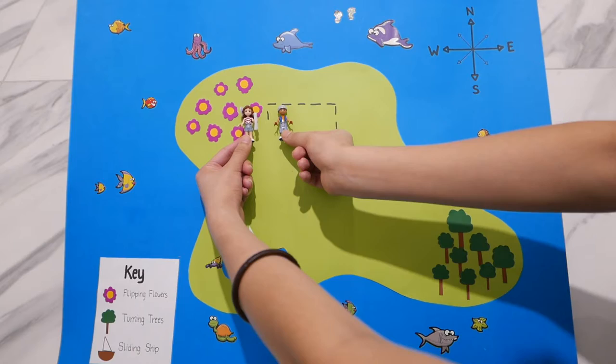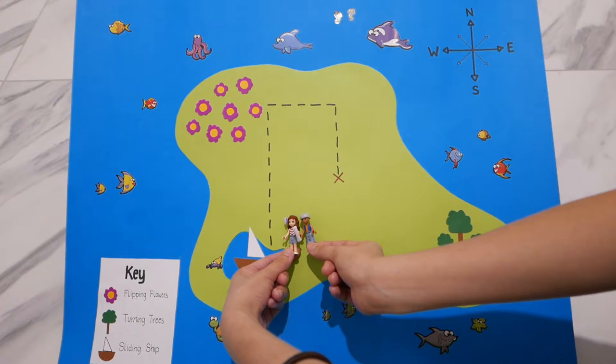Hooray, let's move to the next task. Let's walk 9 metres South to solve the next activity at the sliding ship.